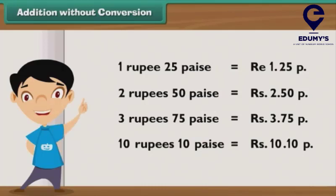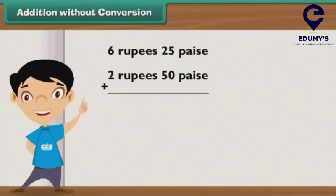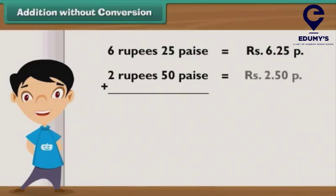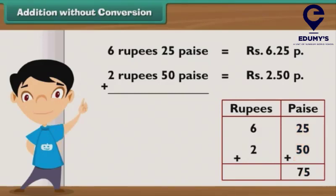Let us now perform additions without any conversions. Let's add 6 rupees 25 paisae and 2 rupees 50 paisae. First, write 6 rupees 25 paisae as ₹6.25P. Just below it, write 2 rupees 50 paisae as ₹2.50P, in such a way that the rupee part falls in the rupee column and the paise part falls in the paise column. Step 1: Add the numbers in the paise column. 25 plus 50 is equal to 75. Write 75 in the paise column.